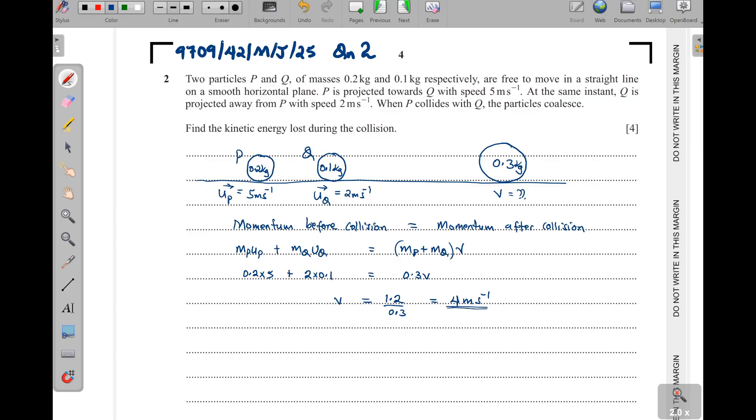Now, after getting this speed here, now we can be in position to get the total final kinetic energy. And you know that kinetic energy is a half MV squared. So, the M is going to be 0.3. And then V is this 4 squared.